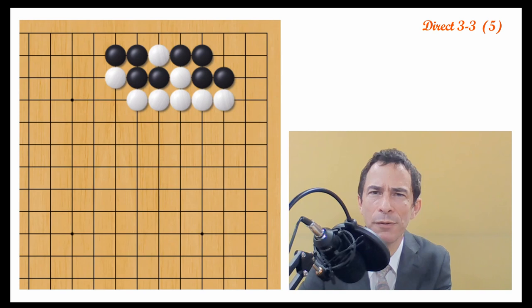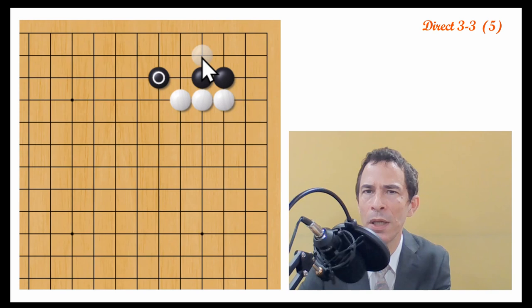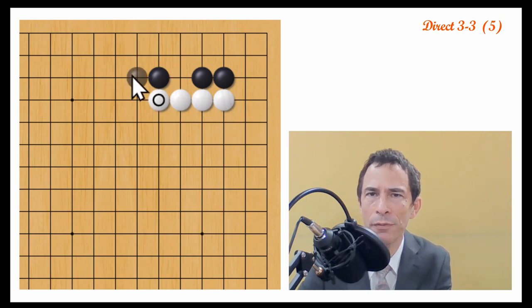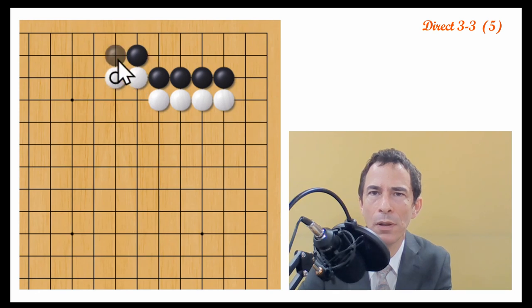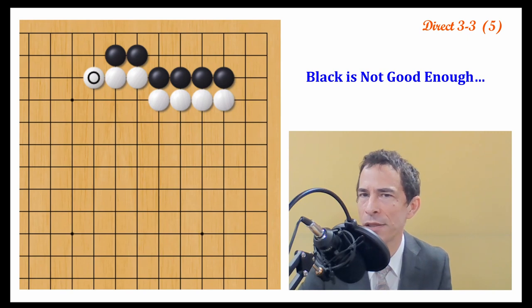White does have the option of not playing this push through and cut. Sorry. I mean, black does have the option of not extending here, in which case black can connect actually. If black connects, then white will cover and we get into this variation. This is not so good for black. Black has crawled a bit too much.